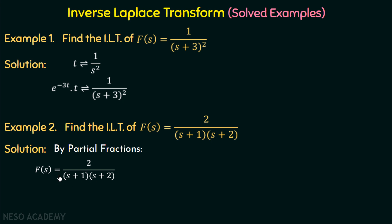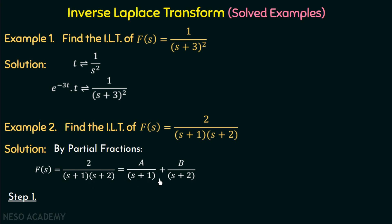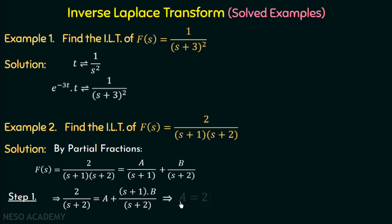By partial fractions, f(s) = 2 / [(s+1)(s+2)] = A/(s+1) + B/(s+2). We need to calculate the values of A and B. In step 1, we multiply both sides by (s+1), giving 2/(s+2) = A + (s+1)·B/(s+2). Setting s = −1 eliminates the B term, giving A = 2. We wisely choose values of s to isolate each constant.